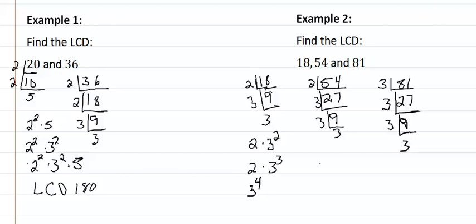So our LCD for this one is going to contain 2 times 3 to the 4th. Or in other words, 2 times 81, and we get 162. And we found the LCD for these three numbers.